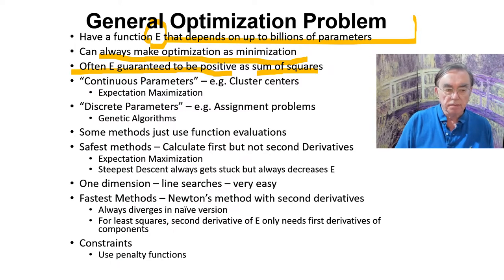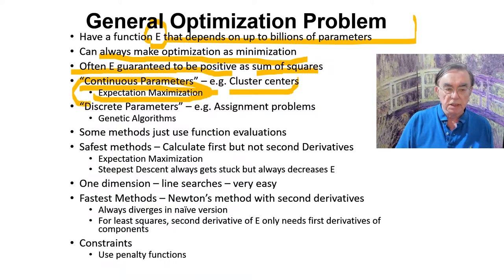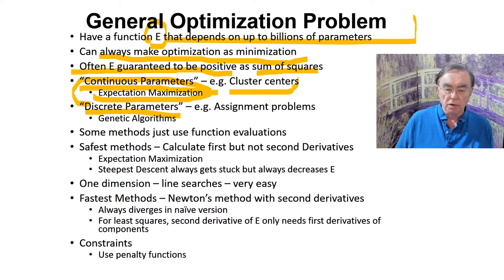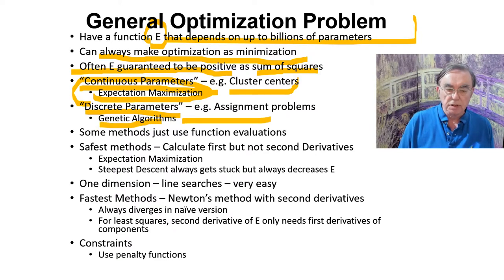We have two types of problems. Continuous parameters, such as the cluster centers — there you often use a technique called expectation maximization. And then discrete parameters, such as the assignment problems, classifying things as yellow or blue, or polar bears or cats. For discrete parameters there's a method called genetic algorithms.